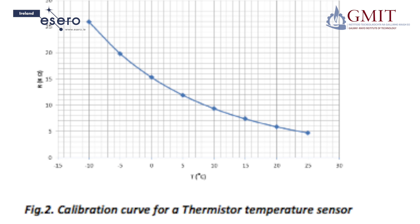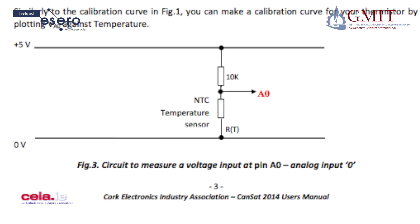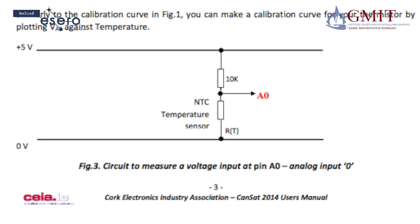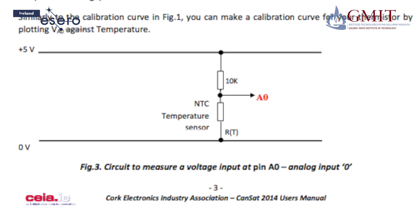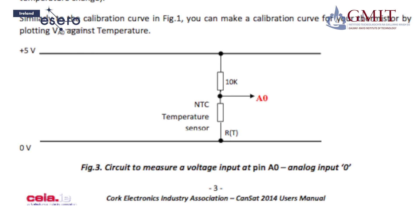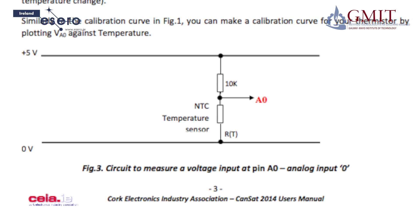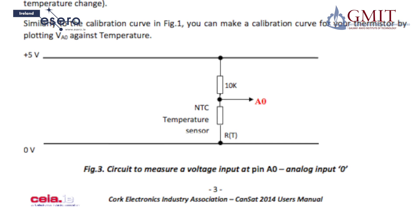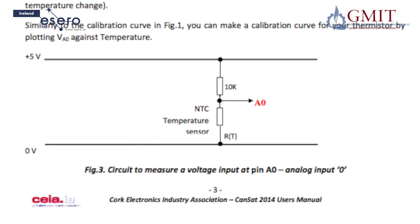In the circuit which I'm about to build, there's a potential divider circuit. This means that the voltage or potential at the black dot between the two resistors — 10K and RT, the thermistor — depends on the value of RT. Thus, the voltage at pin A0 changes when the resistance of the thermistor changes due to temperature change. Similarly to the calibration curve we've just seen, you can make a calibration curve for your thermistor by plotting V at A0 against temperature.